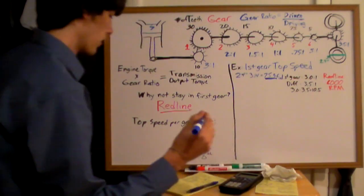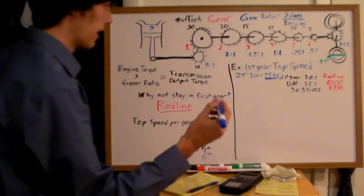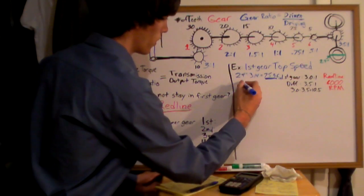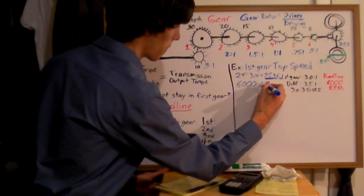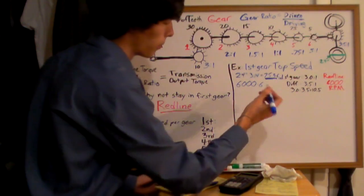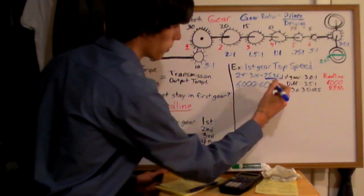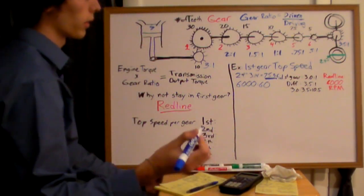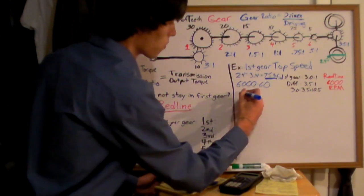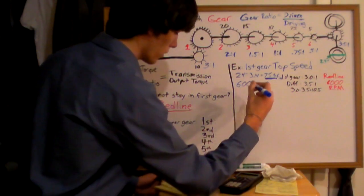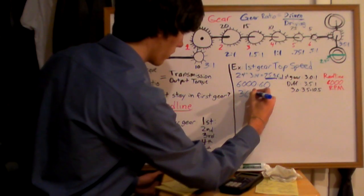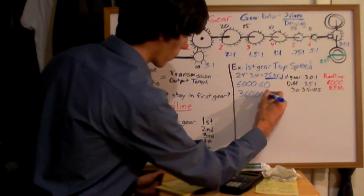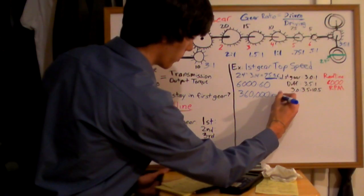Alright, so now we want to calculate the engine speed and how this plays in. So we've got 6,000 RPMs, and we're going to multiply that, revolutions per minute is what RPM stands for. So we're going to multiply that by 60, that way we can get revolutions per hour. So we will now have, this is going to be 360,000 revolutions per hour.